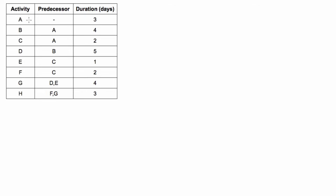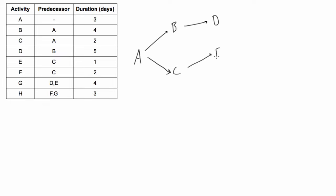First things first, let's do a rough draft. Activity A is the first activity in the project because it has no predecessors, so we'll draw that. Activities B and C both depend on A, so we write activity B and activity C. Next up we have activity D and this depends on B. Now activities E and F both depend on activity C.